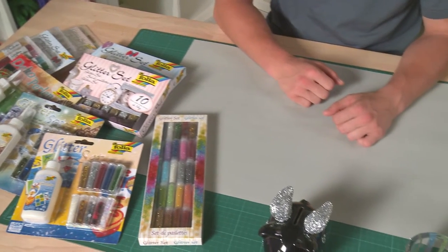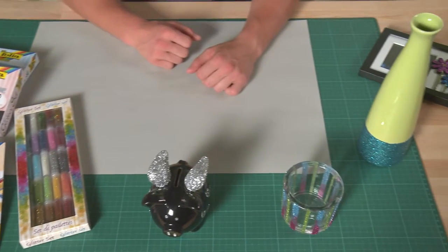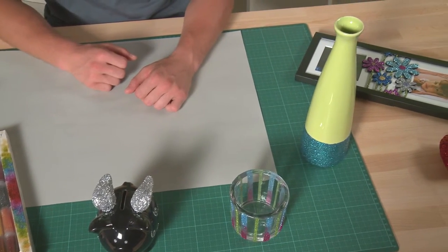For this, Folia has various glitters to choose from, such as smooth and rough glitters as well as decorative beads.